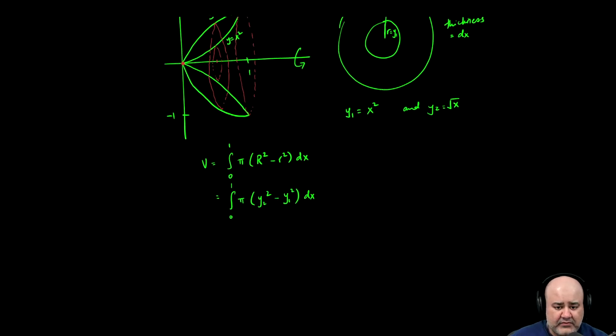Again, we can't integrate a function of y with respect to x. So we can rewrite this as the integral from 0 to 1 of pi times y sub 2 we realized here was root x. That's the larger radius. So root x, the quantity squared, minus y sub 1 we realized earlier was x squared. So that's the smaller radius squared.